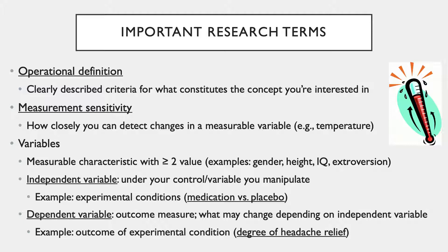In order to properly evaluate research findings, it's important to understand some foundational research terminology. First, the operational definition — a clearly described definition where the criteria for what constitutes the concept you're interested in is clearly presented. This can be easy if the variable is something like shoe size, but when the variable is something difficult to define, such as motivation, love, or success, it's even more important that the researcher put time and effort into clearly operationalizing their definition so that everyone knows exactly what they are studying.